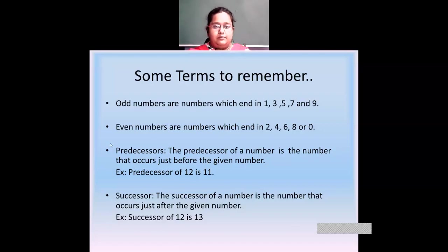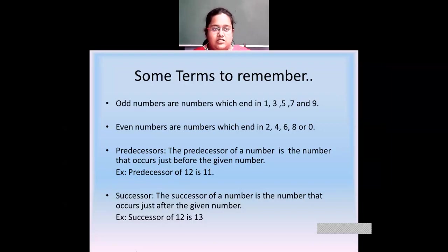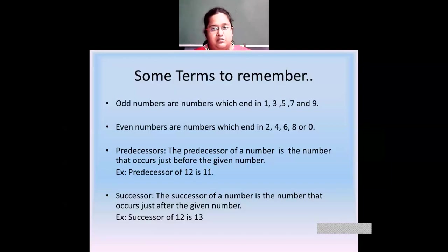Now, predecessors. The predecessor of a number is the number that occurs just before the given number. For example, if the given number is twelve, then the predecessor of twelve is eleven — the number just before twelve. Similarly, successor means the number which comes after the given number. The successor of twelve is thirteen. The predecessor of one hundred is ninety-nine, and the successor of one hundred is one hundred and one. These are the terms: odd numbers, even numbers, predecessors, and successors.